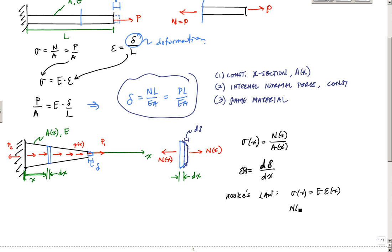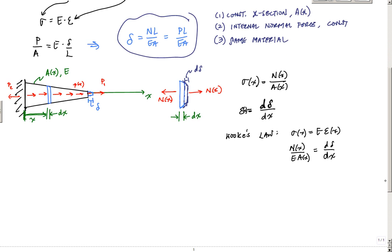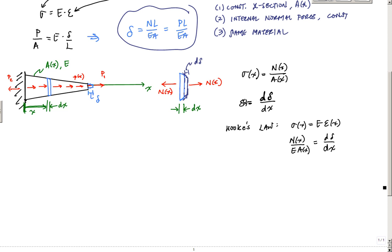This would just be N of x over EA of x is equal to d delta over dx. And this whole thing, that dx is probably screaming integral, right?